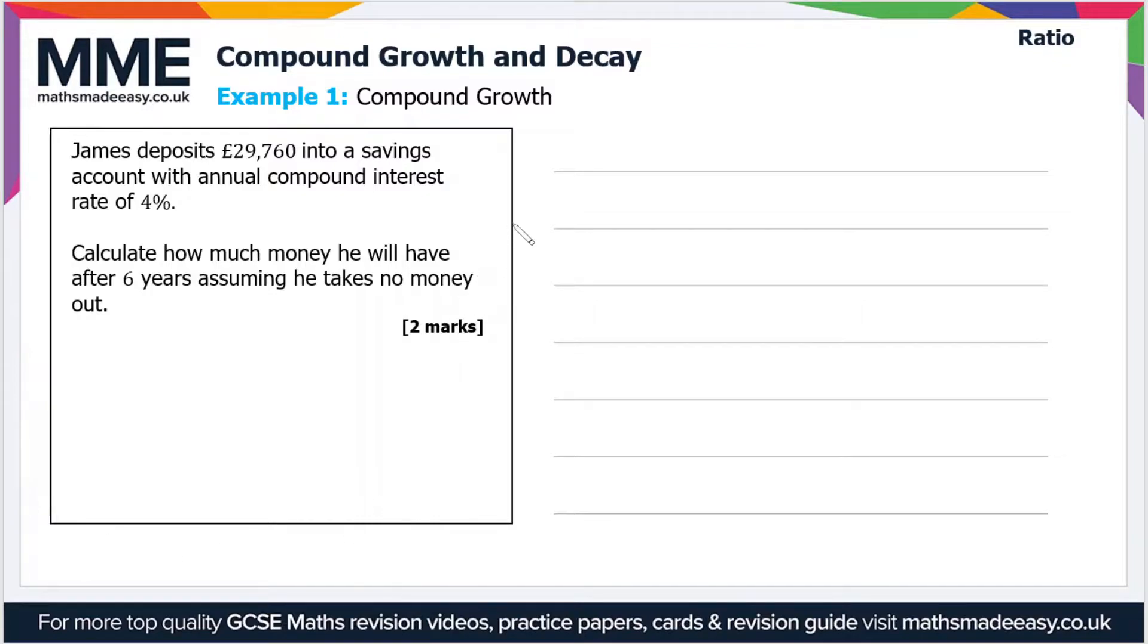We're just going to run through some example questions starting with the first one here. James deposits £29,760 into a savings account with an annual compound interest rate of 4%. Calculate how much money he will have after six years assuming he takes no money out.